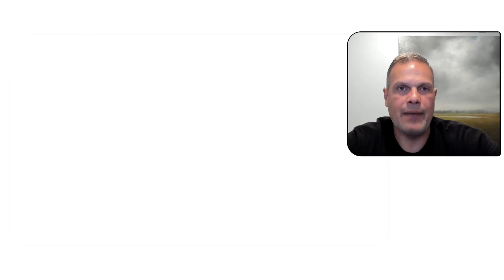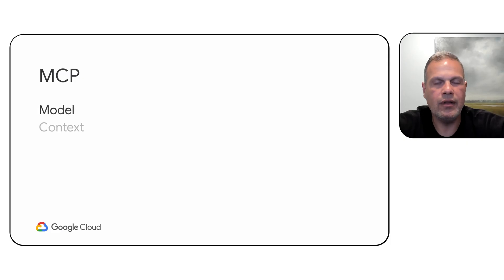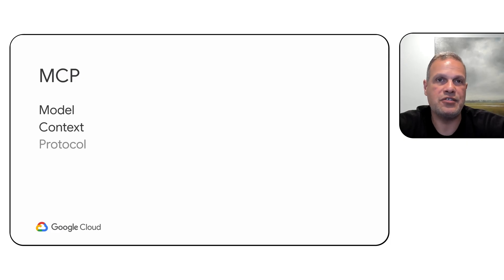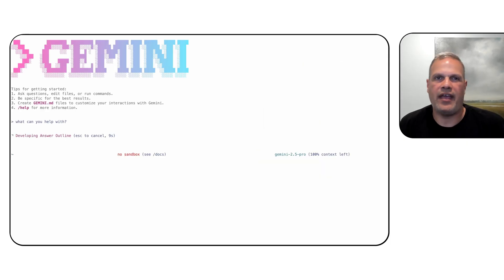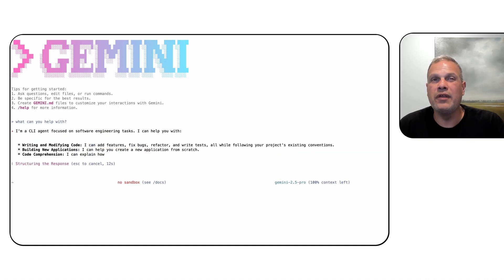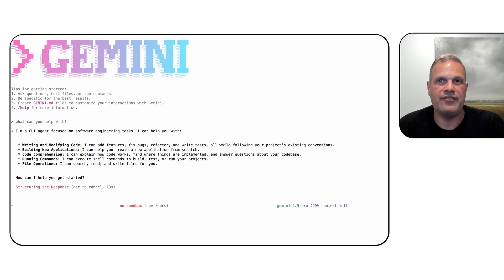Hot off the presses, we just released a GKE MCP server. MCP, Model Context Protocol, allows us to basically plug in tools to the various AI assistants, such as Cloud, Cursor, or the newly launched Gemini CLI.